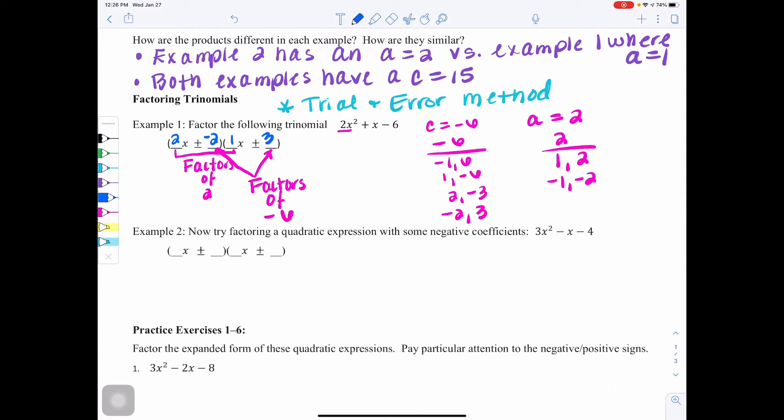This is where your multiplying of polynomials is going to work for you, because if we start to do our multiplications, 2x times x would be 2x squared. That would work. 2x times 3 would be 6x, but then negative 2 times x would be negative 2x, and the 6x and the negative 2x would make a positive 4. And if I look here in my middle term, I don't have a positive 4. So that combination is not going to work.